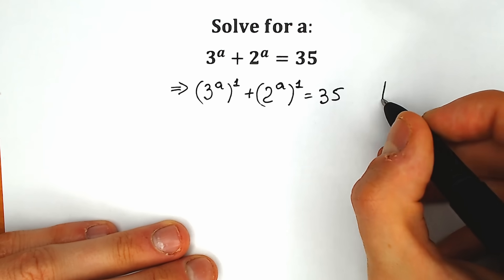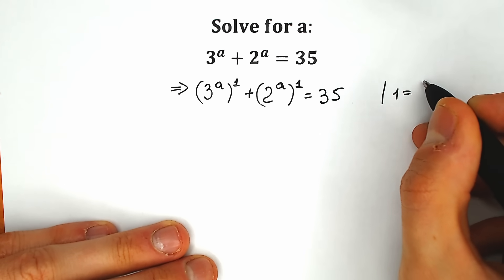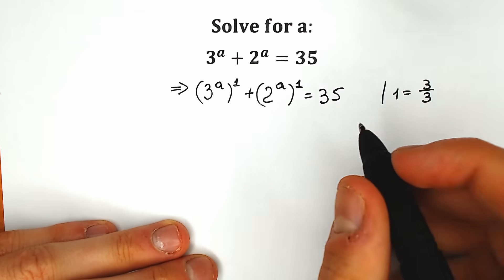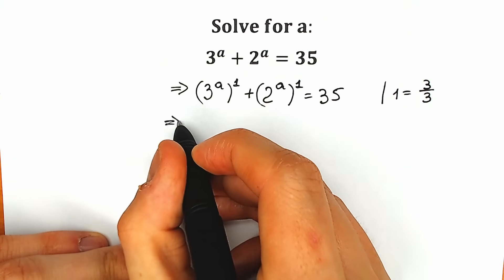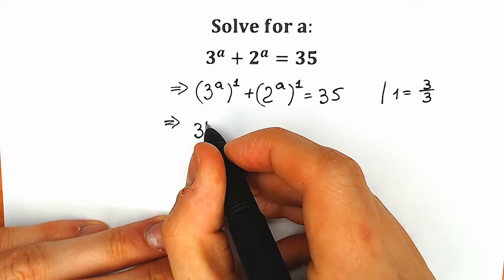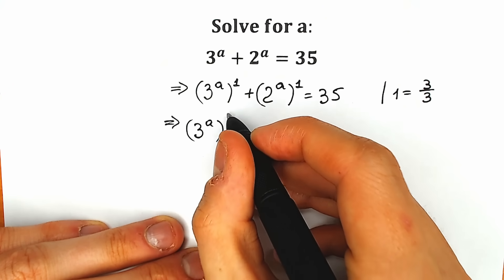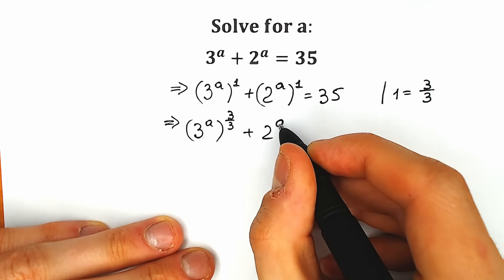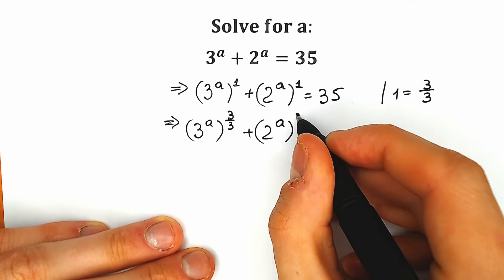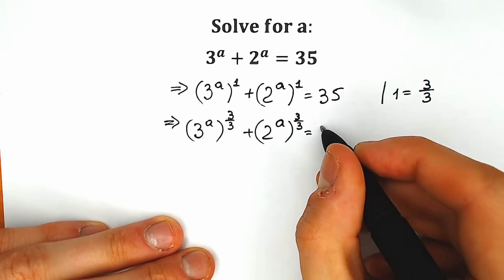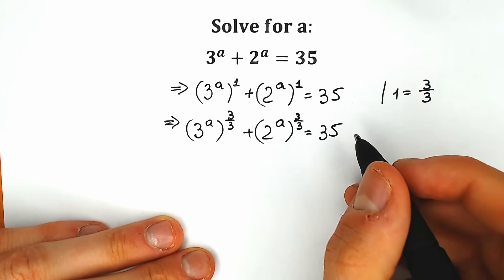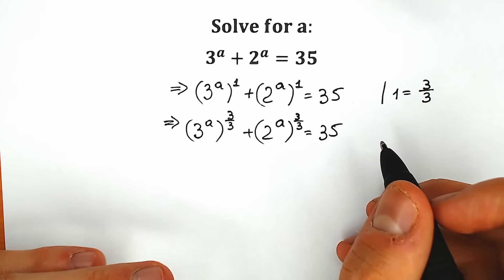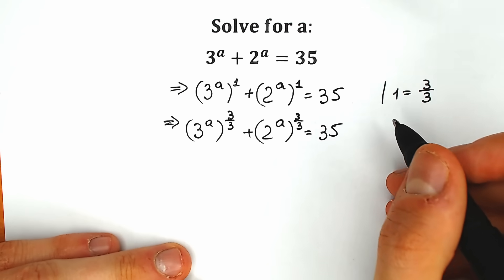Now instead of this 1, we're going to write 3 over 3, because 3 over 3 is the same as one. So we have 3 to the power a raised to the power 3 over 3, plus 2 to the a to the power 3 over 3, equal to 35. A lot of students ask me why I do this.